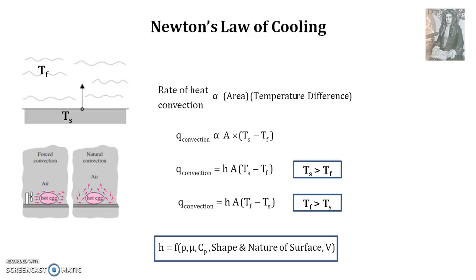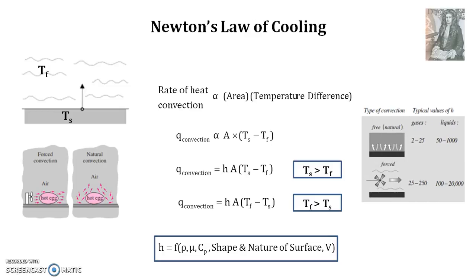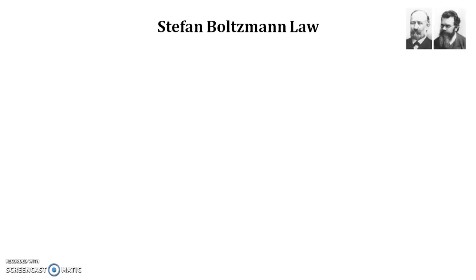Newton initially thought h was a constant quantity, but after exhaustive experiments it was understood that the convection heat transfer coefficient h is a very complex quantity. It depends on properties of the fluid such as density rho, viscosity mu, and specific heat cp; the shape and nature of the surface (spherical, flat plate, or other); and the velocity of the fluid. Representative values of h differ for gases and liquids and for free versus forced convection.